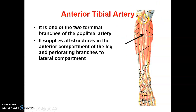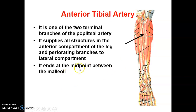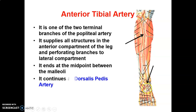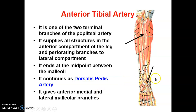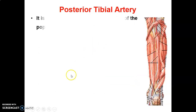At the lower border of the popliteus muscle, the popliteal artery divides into anterior and posterior tibial arteries. The anterior tibial pierces the interosseous membrane to enter the anterior compartment of the leg, supplying all structures there, and can give perforating branches to the lateral compartment. The anterior tibial terminates at the midpoint between the medial and lateral malleoli, continuing as the dorsalis pedis artery. It also gives anterior medial and lateral malleolar branches.